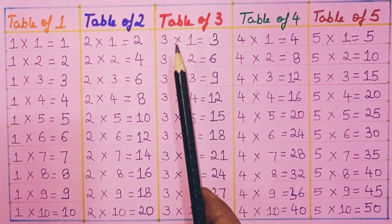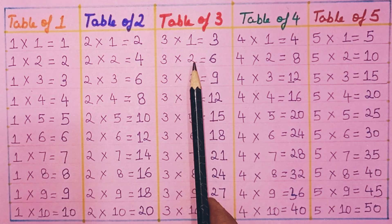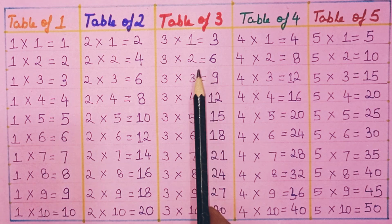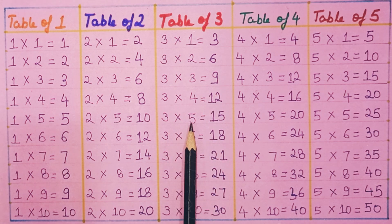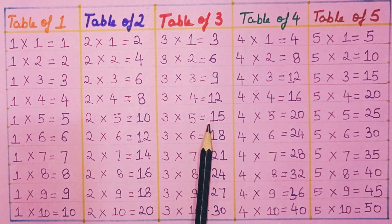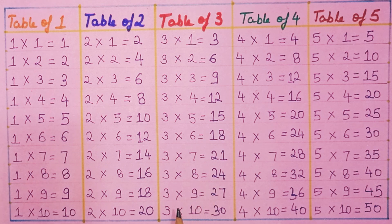Table of Three. Three ones are three. Three twos are six. Three threes are nine. Three fours are twelve. Three fives are fifteen. Three sixes are eighteen. Three sevens are twenty-one. Three eights are twenty-four. Three nines are twenty-seven. Three tens are thirty.